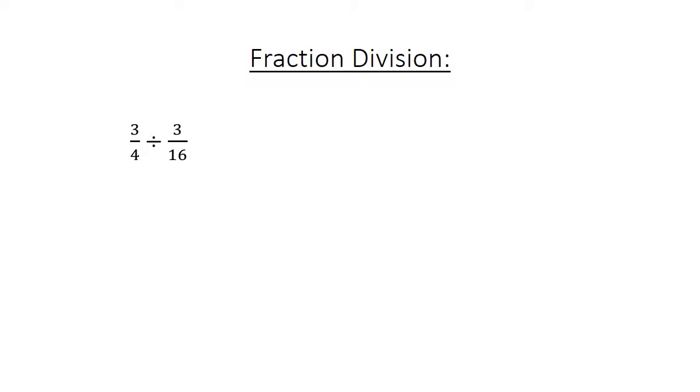Fraction division: 3 over 4 divided by 3 over 16. 3 over 4 times—invert the last fraction—16 over 3. 48 divided by 12 equals 4.